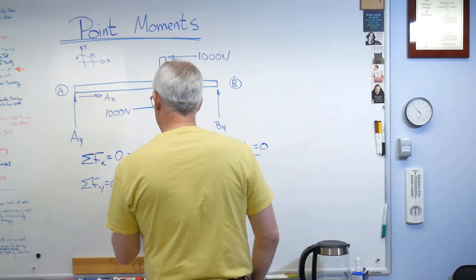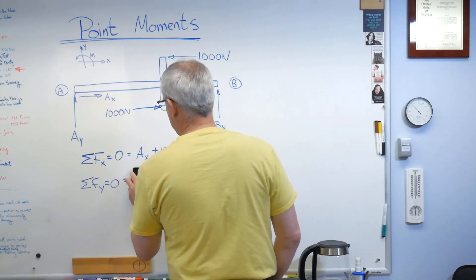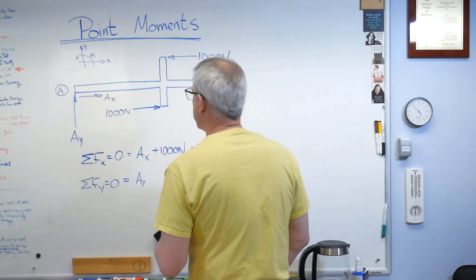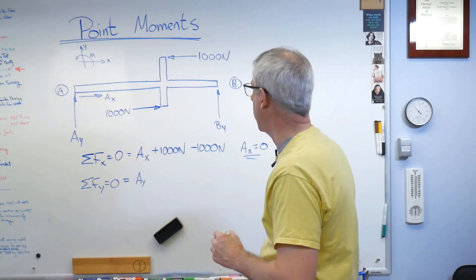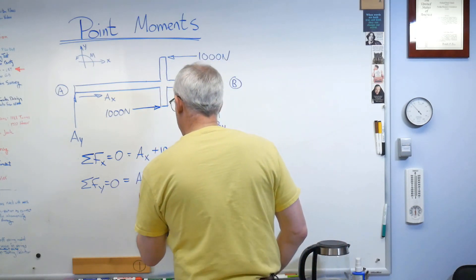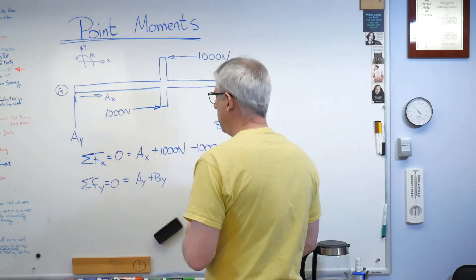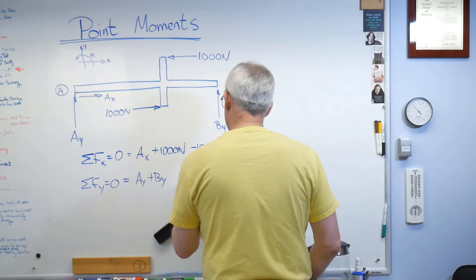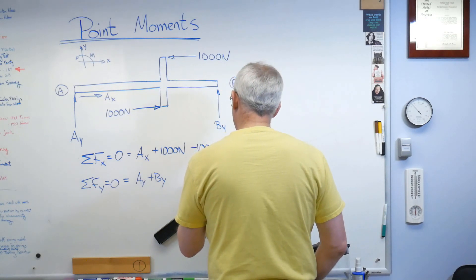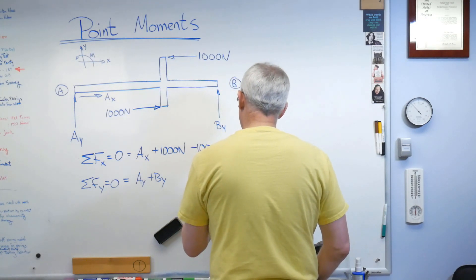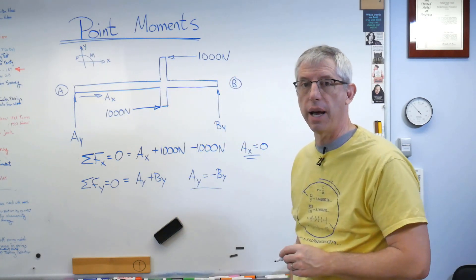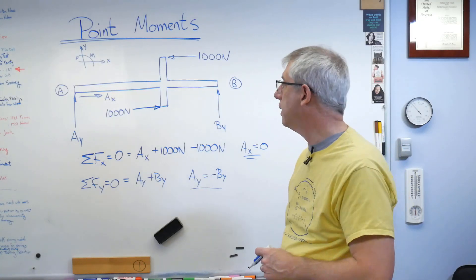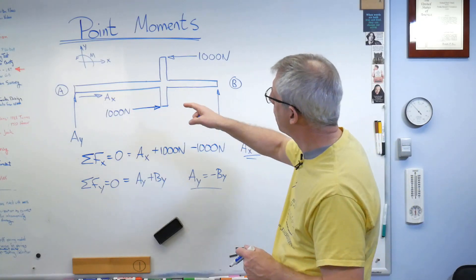Ay plus By equals zero, so Ay equals negative By. We're going to need that in a minute. This is easy, isn't it? Now there are two ways I can handle this: solve it directly as drawn, or replace the two opposing forces with an equivalent point moment.